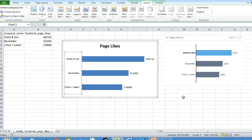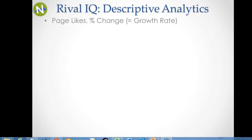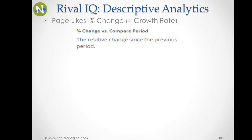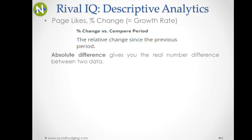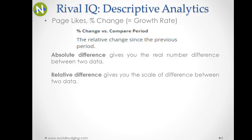In the next step we are going to learn how to calculate and create a graph for percentage change in page likes. The next descriptive report RivalIQ shows is called page likes percentage change, or in other words, growth rate. RivalIQ defines this as the relative change since the previous period. You need to know two types of difference in analytics: absolute difference, which gives you the real number difference between two data points, and relative difference.